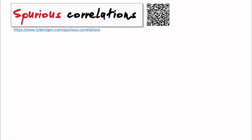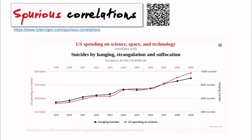I love this page called Spurious Correlations — you can visit that web page here. This guy is basically collecting data sets and plotting those data sets that for some reason are correlated. So this is a nice example: if you want to predict the number of suicides by hanging, strangulation and suffocation, you could use the US spending on science, space and technology, because the correlation is 0.99.